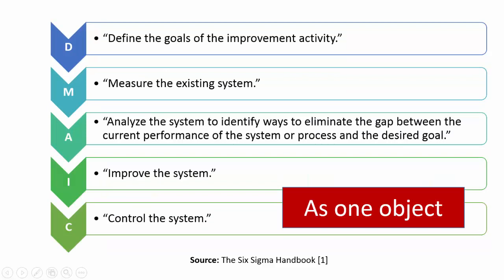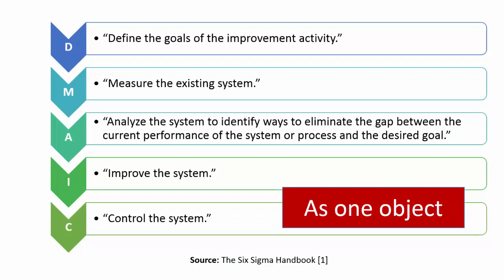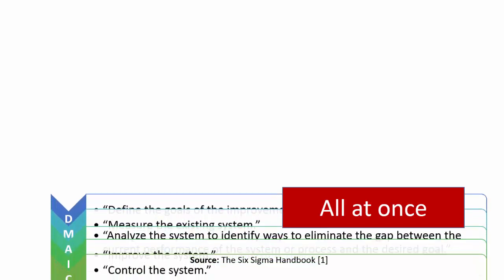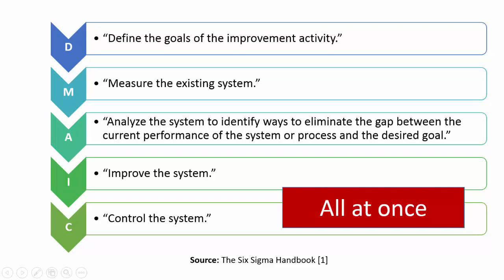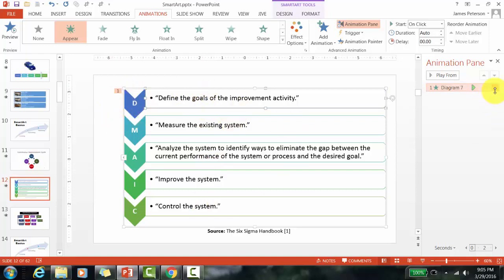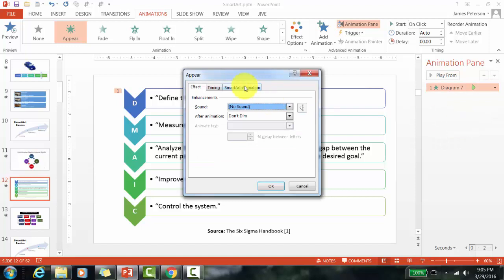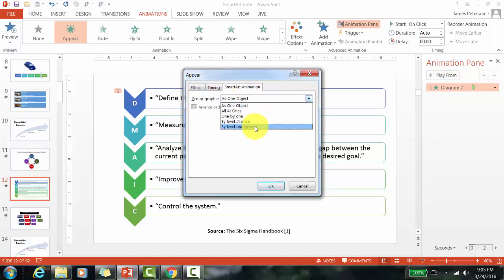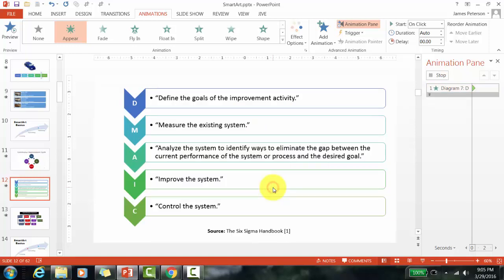As one object, everything comes up at once. 'All at once' looks the same with Appear, but with a fly-in animation you can see the difference: as one object the whole picture flies in at one speed, while all-at-once means ten separate objects traveling in — the D travels faster to reach the top in two seconds, while the C travels slower to reach its position. I'll choose 'By Level At Once' and click OK, giving me two initial clicks.